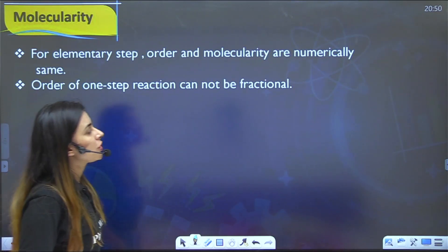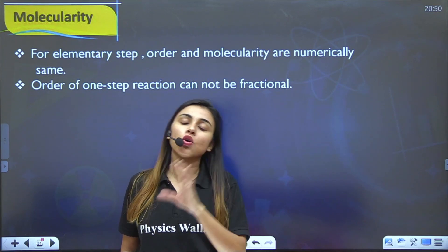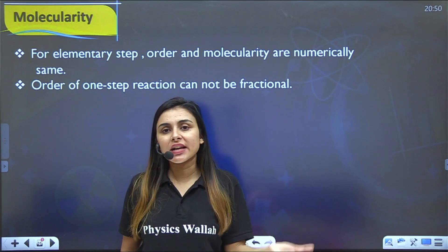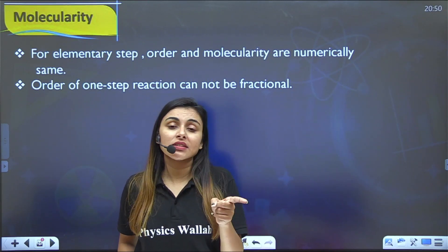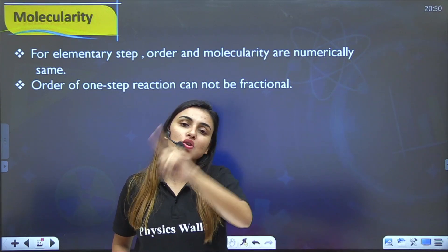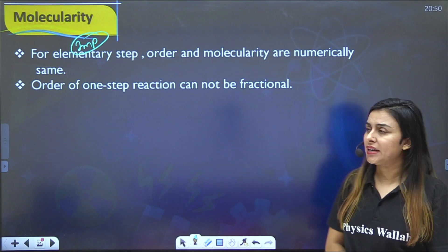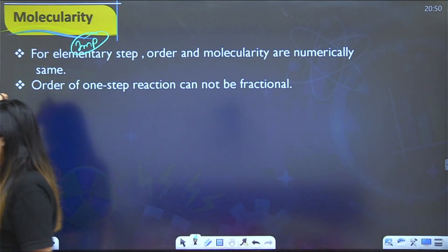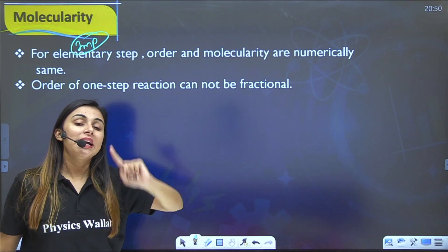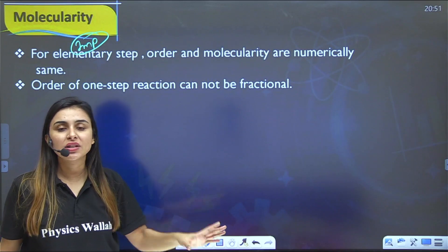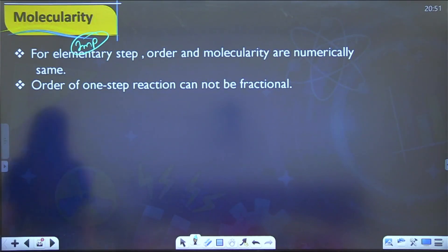For an elementary (single-step) reaction, order and molecularity are numerically equal. For complex (multi-step) reactions, molecularity cannot be defined; order must be determined experimentally. Therefore, for a single-step reaction, order can never be negative or fractional — it must be a whole number, since it equals the molecularity. This is a very important distinction for exams.